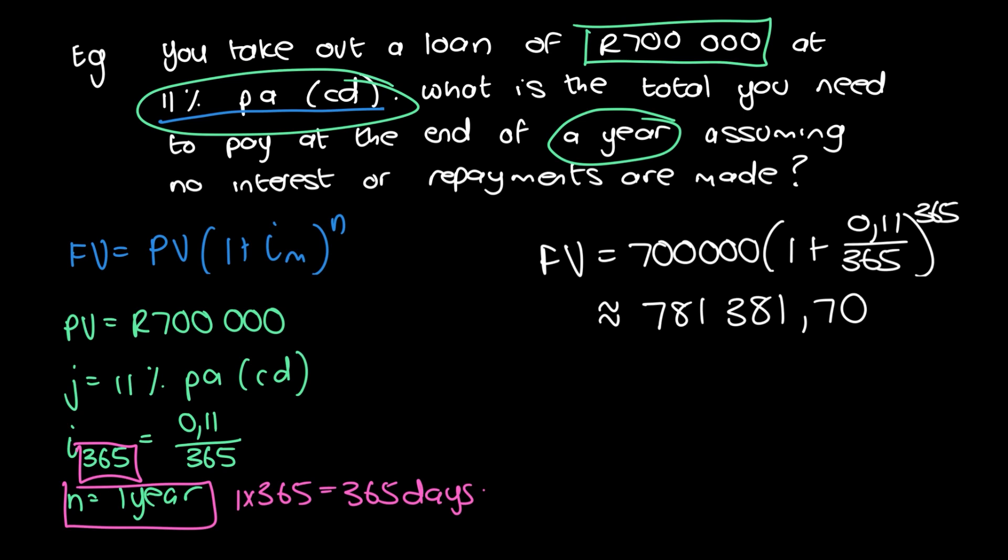And again, use two decimal places for finance money kind of a situation. One last thing is once again, we can actually write it as FV subscript 365 equals 781,381.70. And that 365 is telling us when that future value is. And that's just going to help clarify things, particularly with work later on.